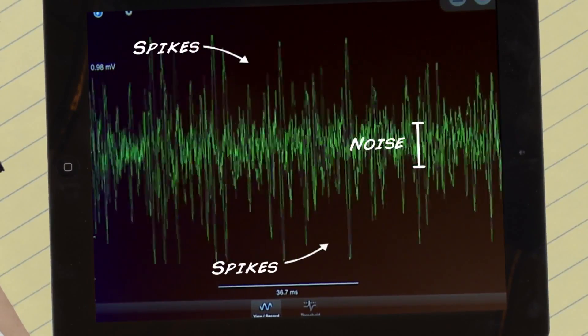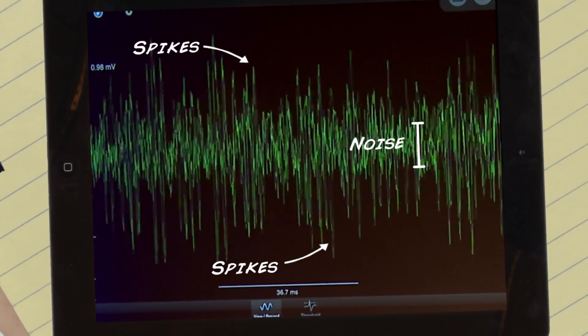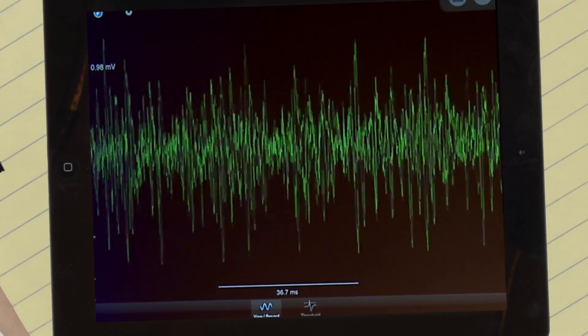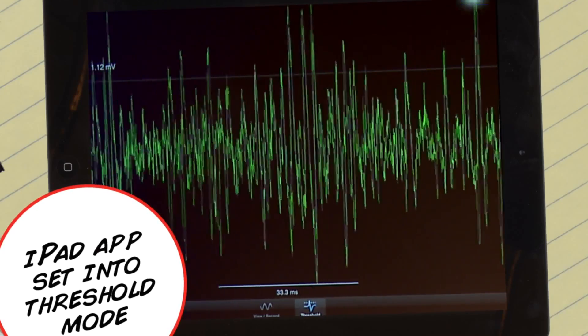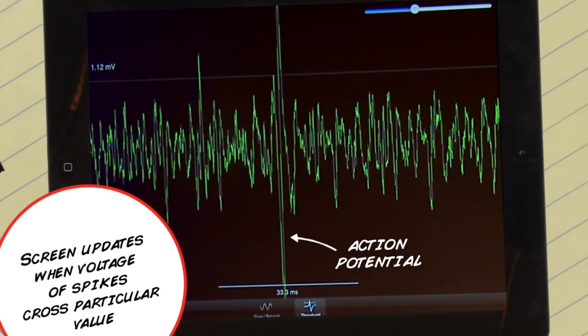So remember we said what that action potential looks like. It looks like a spike. We're going to take a look at what one of them looks like in just a brief second. I'm going to tap here. So we can sort of average this guy. So there we see it. That's an action potential.